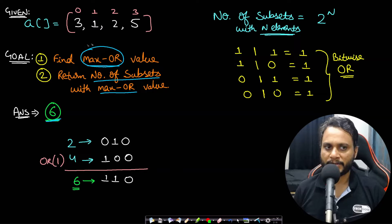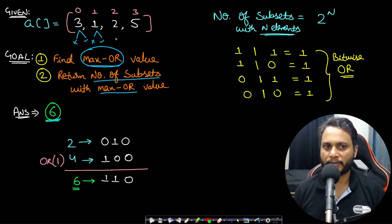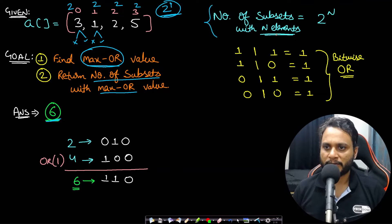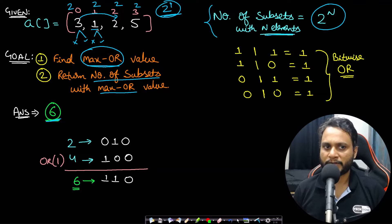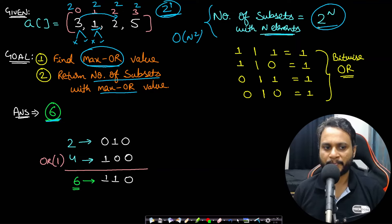A subset is not a subarray — all subarrays are included in subsets, but a subset gives you the choice of including or excluding any item. So each item has two choices, meaning if you have four items the total number of subsets is 2^4. The number of subsets with n elements is always 2^n, while subarrays require O(n²) since you cannot skip any random item in between.